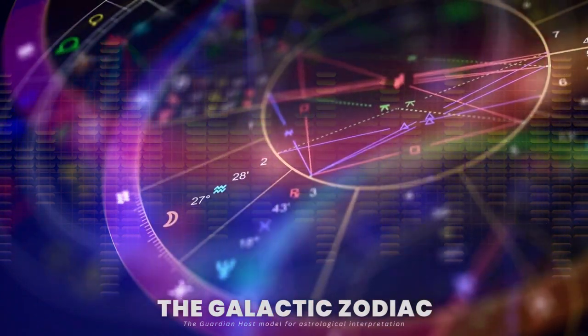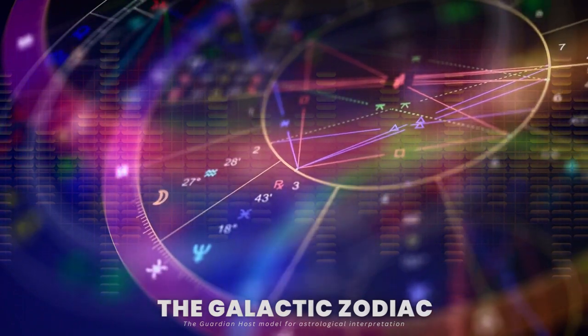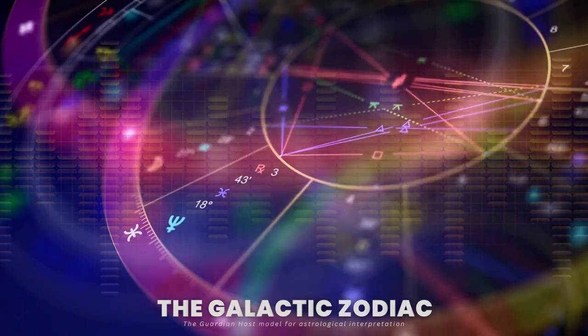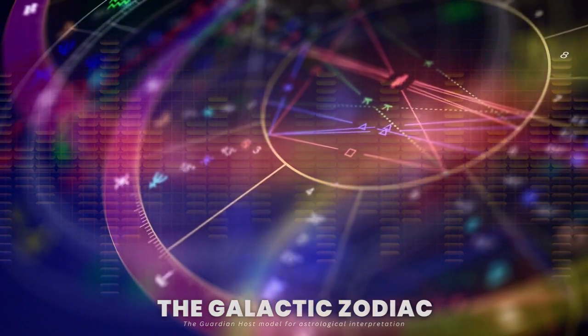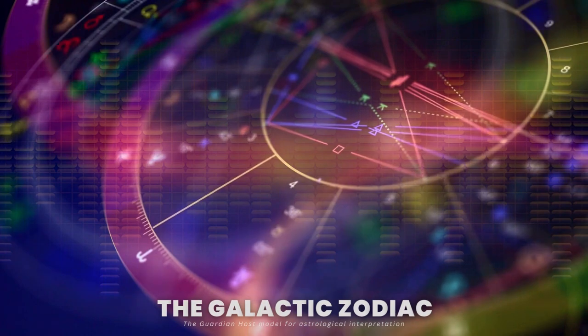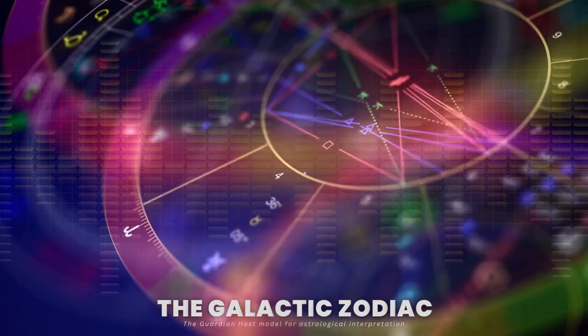Gemini: June 20th to July 20th. Its themes are fixation and synthesis. Its element is air.